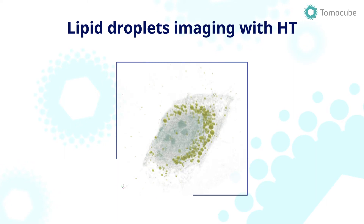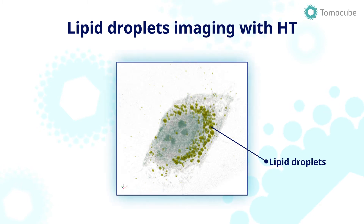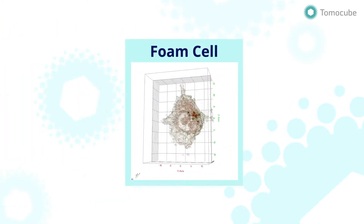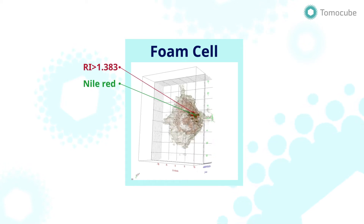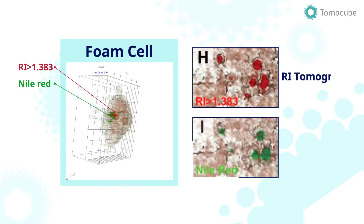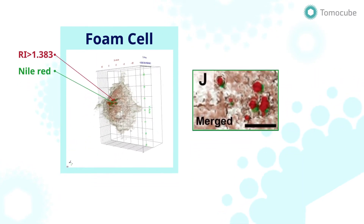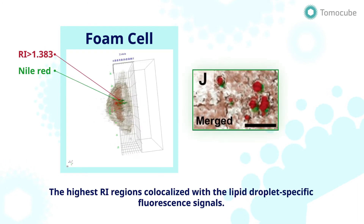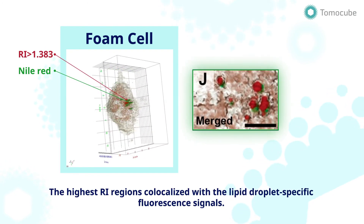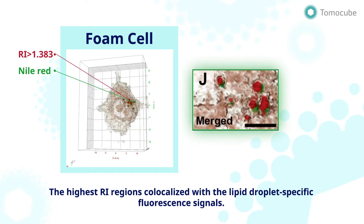By using the 3D refractive index tomogram acquired by HT, it is possible to clearly distinguish the lipid droplets from the surrounding cellular content. The research team successfully captured lipid droplets in live foam cells using correlative HT and fluorescence microscopy. They confirmed that the area with high refractive index marked in red and the area stained with lipid-specific fluorescence dye were an exact match. Thus, they were able to show that holotomography can be appropriately used to identify lipid droplets in live cells without using any labels.